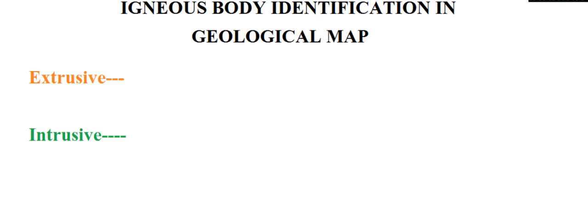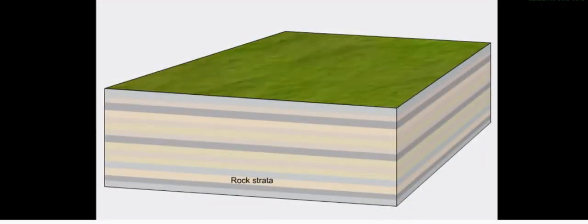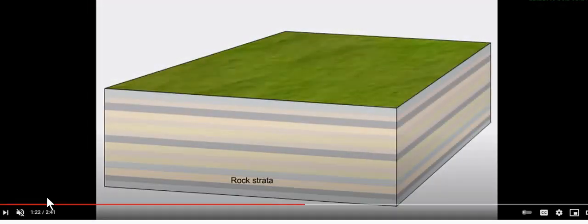Hello, good morning. Today I will discuss igneous body identification in geological maps. We all know there are two types of igneous bodies found on the earth's surface and in geological maps: one is extrusive, another is intrusive. Extrusive includes ash, lava, towers, etc. These are usually in the form of flows or beds, pyroclastic materials, shown by outcrop.